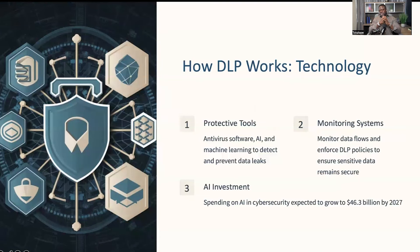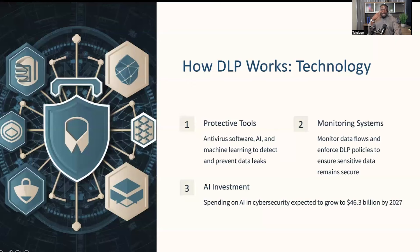Finally, there is technology. These include various tools and systems designed to protect, detect, and prevent data leaks. For example, antivirus software can help protect against malware, while AI and machine learning can identify suspicious activities by comparing content to your organization's DLP policies. These technologies work together to monitor data flows and ensure that sensitive information remains secure. A report by Cybersecurity Ventures shows that spending on AI in cybersecurity is expected to grow to $46.3 billion by 2027, underscoring the critical role of technology in modern DLP. DLP is essentially a combination of people, processes, and technology working in unison to protect your data.